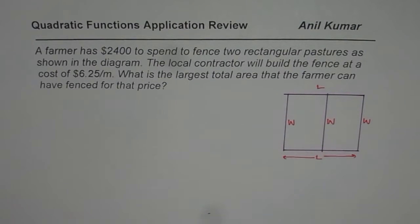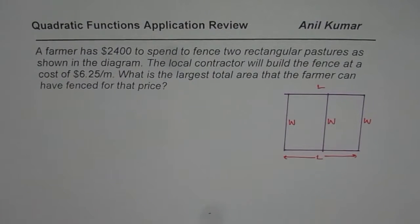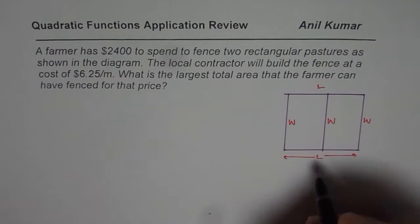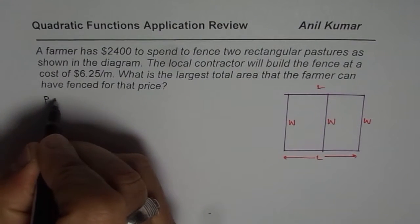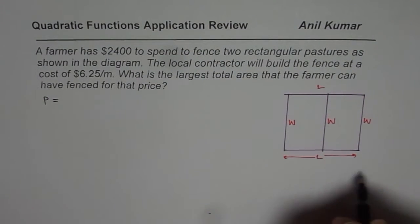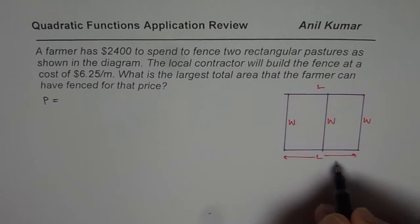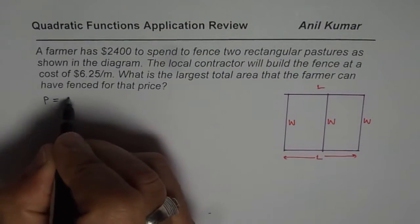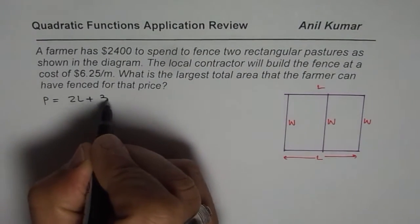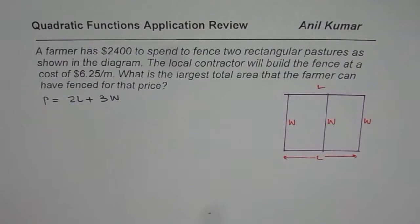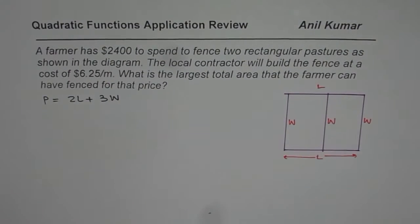So what is the perimeter of this? From the sketch, we can find the perimeter. The perimeter of the fencing will be 2 times L plus 3 times W.